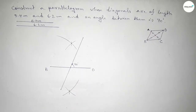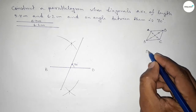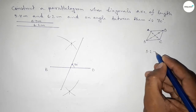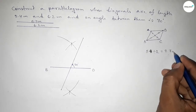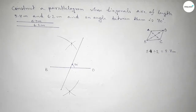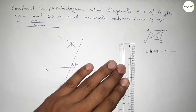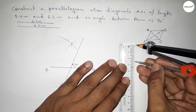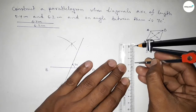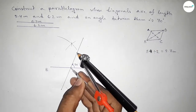Now we have to bisect the 5.4 centimeter line. Dividing 5.4 by 2 gives 2.7 centimeters. So we take a measurement of 2.7 centimeters on the compass and mark this length along the 70 degree line from the midpoint.